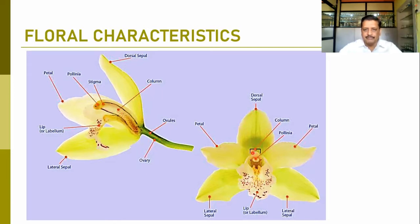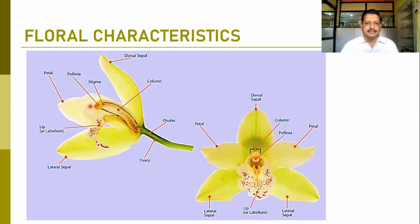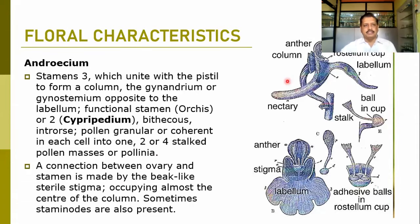In the column we find the pollinia and the stigmatic surface. The ovary continues into the column, and in the column we find the stigma. Nearby the stigma are the pollinia. This is a typical structure — regular anther cells are not there; instead they are modified into pollinia structures. The same structure is shown from another angle. Mostly three stamens unite with the pistil to form a column — the gynostamium — opposite to the labellum.